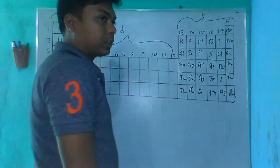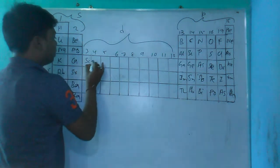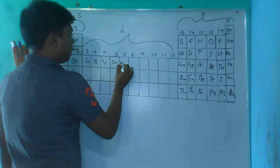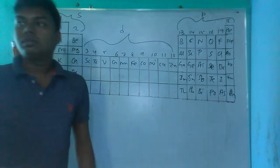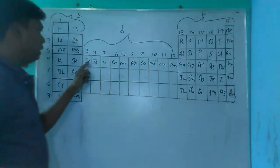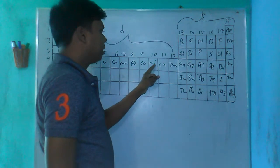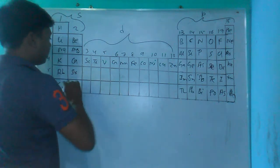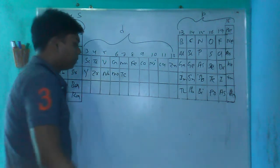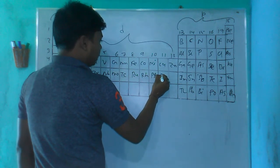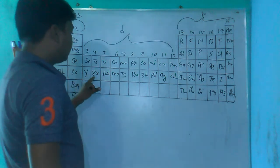D block elements are the transition elements. The first transition series includes Scandium, Titanium, Chromium, Manganese, Iron, Cobalt, and others. This is the D block. The second transition series follows a similar method, representing a completely different set from the first transition series.